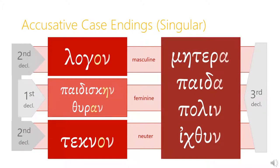Here is what those endings look like on some familiar nouns. The accusative singular form of logos is logon, with the omicron connecting vowel and nu. The first declension noun paediske becomes paediskein in the accusative singular, and thura becomes thuran. The second declension neuter noun teknon becomes teknon in the accusative singular. You'll notice that with the neuter nouns, that -on ending was also used in the nominative singular.